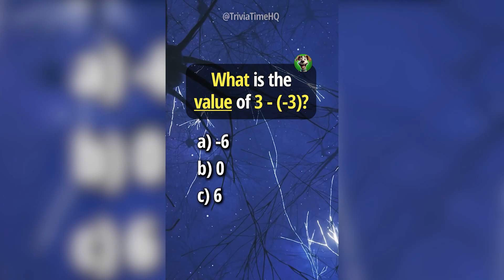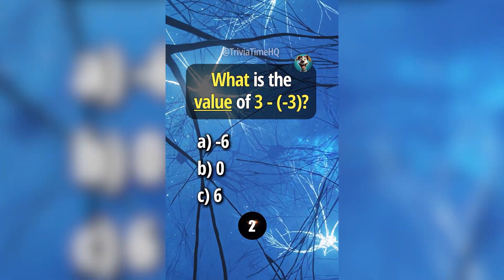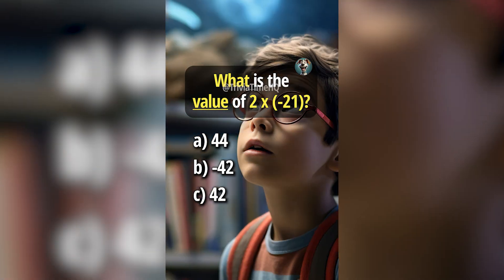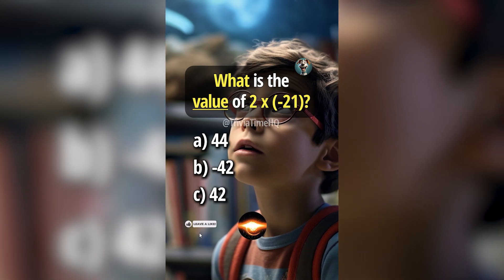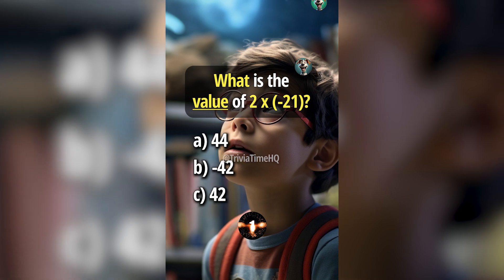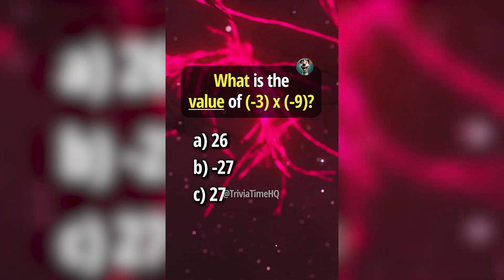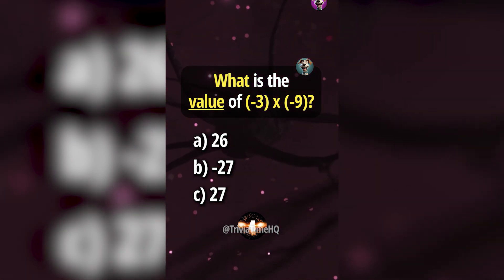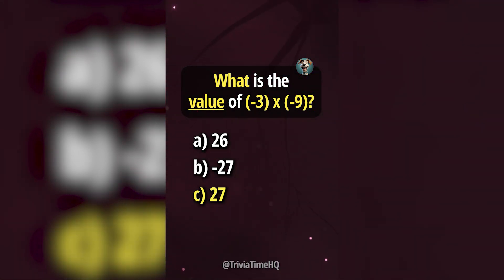What is the value of 3 minus negative 3? Answer C, 6. What is the value of 2 times negative 21? Answer B, negative 42. What is the value of negative 3 times negative 9? Answer C, 27.